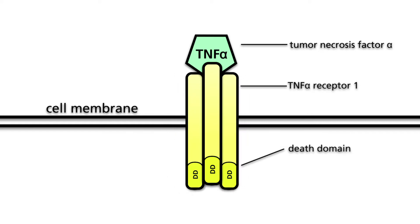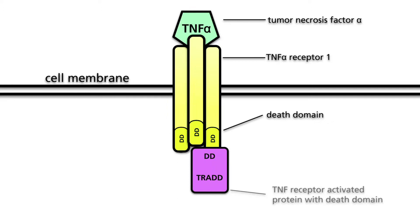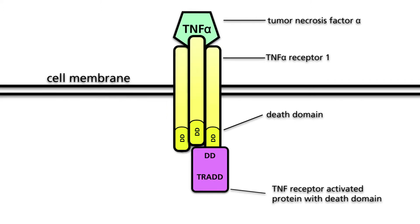TNF-alpha binds to three receptor monomers. The receptor monomers contain what are called death domains, or DD for short. These death domains interact with those of other proteins. Upon trimerization of the receptor monomers, the death domains of the receptor bind the TNF receptor-associated protein with a death domain, abbreviated TRADD, and the receptor-interacting protein 1, or RIP1.